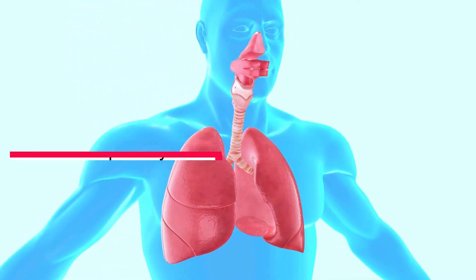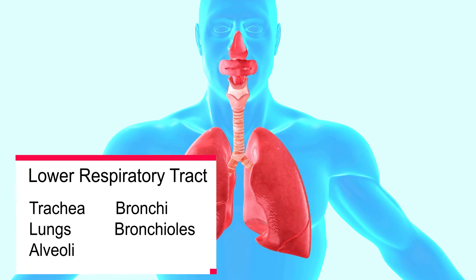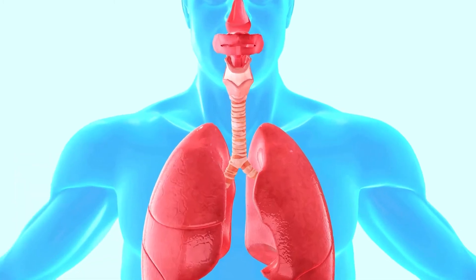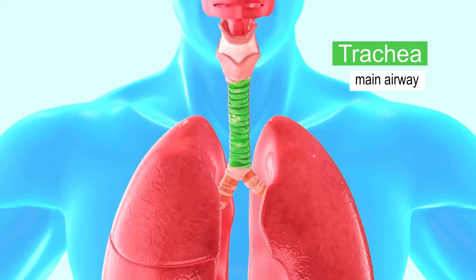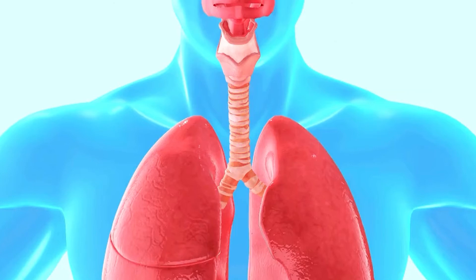The lower respiratory tract is composed of the trachea, the lungs, the alveoli, bronchi, and bronchioles. The trachea, or the windpipe, is the main passageway to the lungs. Due to the presence of bands or rings of cartilage in the trachea, it is flexible enough to keep the passageway open for air. As the air moves down into the trachea, its hair lining and mucus also trap dust particles and bacteria which are not filtered by the nose.